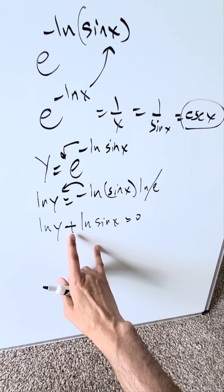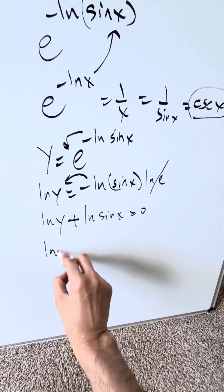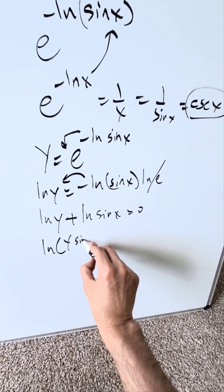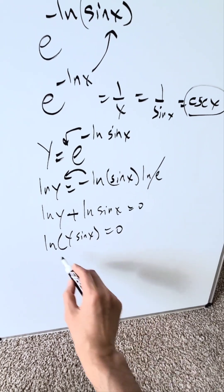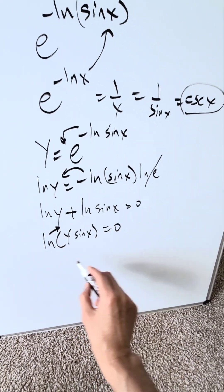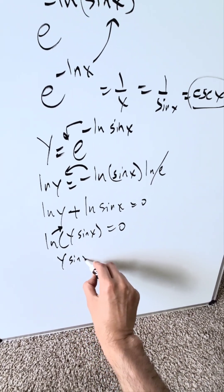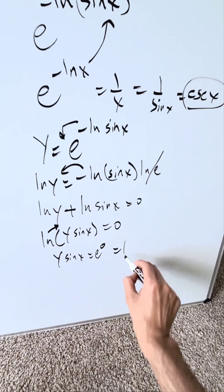You have independent logs in a sum. It's equal to a common log with a product—it's a logarithmic identity. I have natural log of y sin x equal to 0. Push the natural log on the other side. You'd have y sin x equals e to the power of 0, which equals 1.